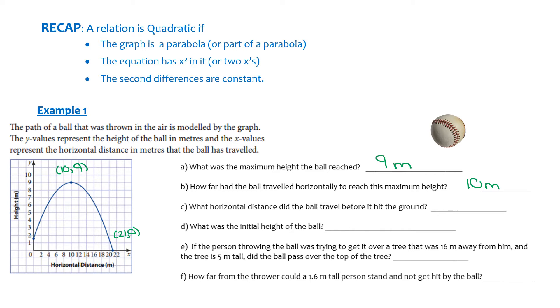At part C, what distance did it travel before it hit the ground? It traveled 21 meters horizontally before it hit the ground.